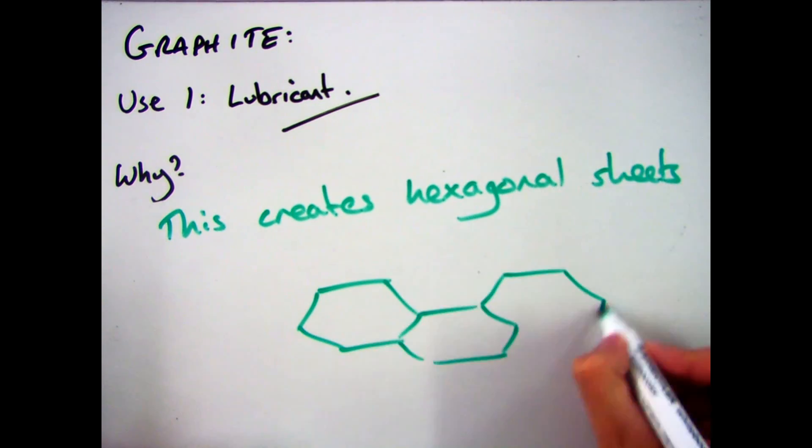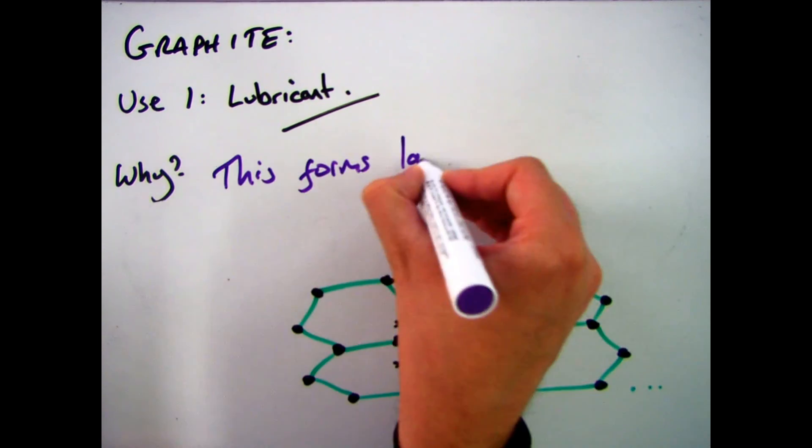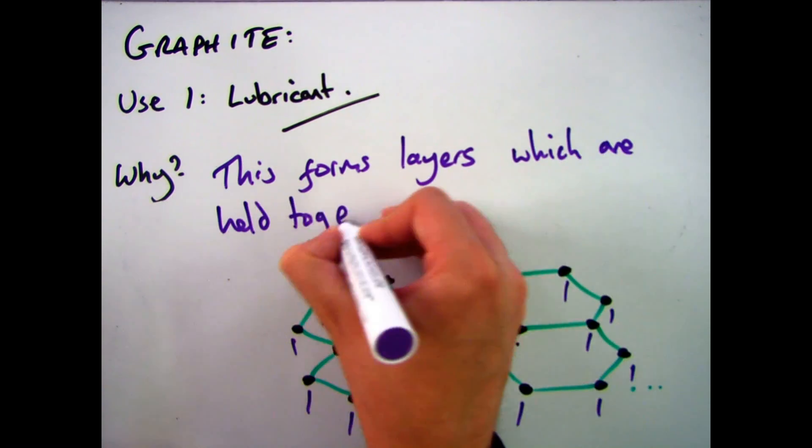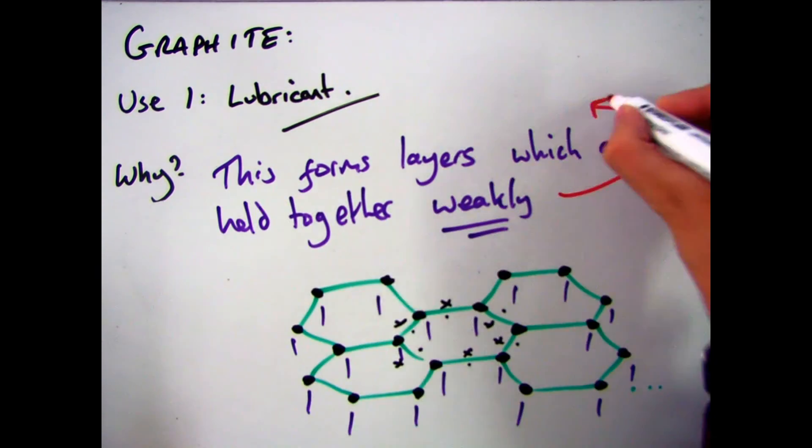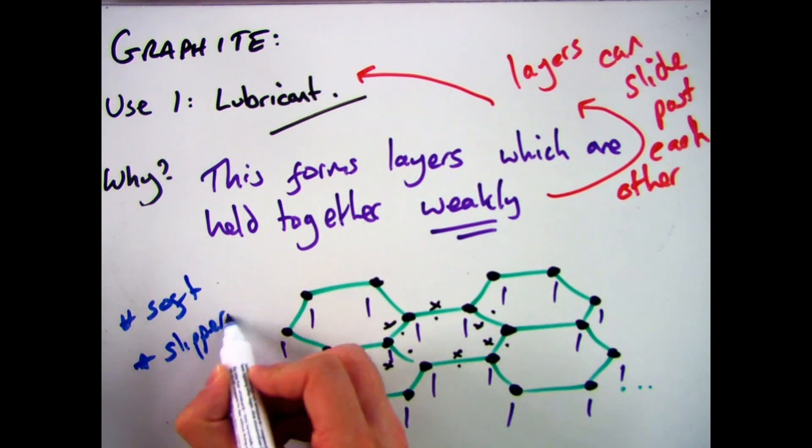Now as a result of this, the actual structure starts to form hexagonal sheets. And these sheets start to build up and form layers. Layers which are held together weakly and can slide past each other. Which gives them the properties of being soft and slippery.